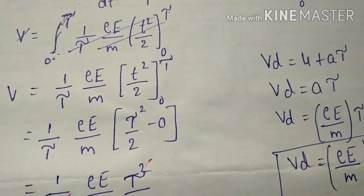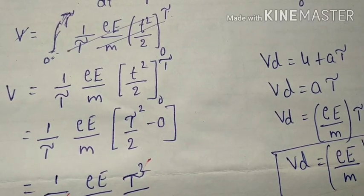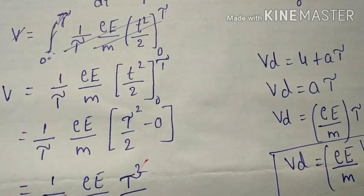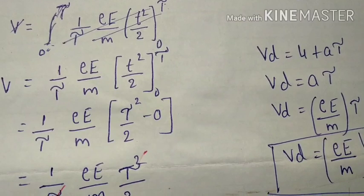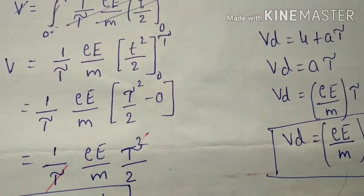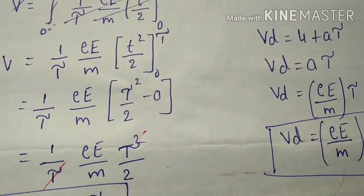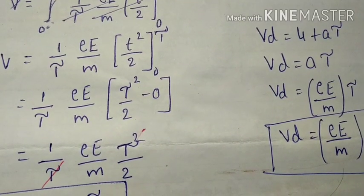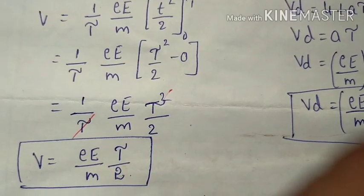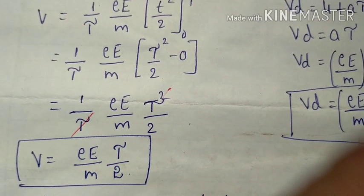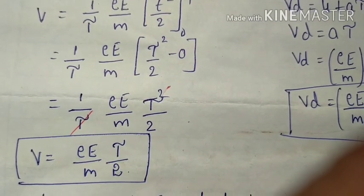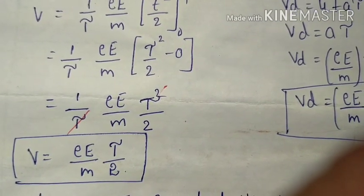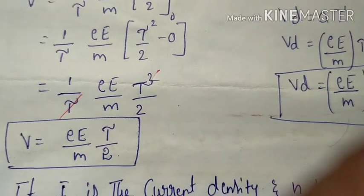Applying the upper and lower limits, we get v = (1/2)(eE/m)(tau²/2) minus 0, and simplifying, we obtain the velocity as v = eE·tau / (2m).